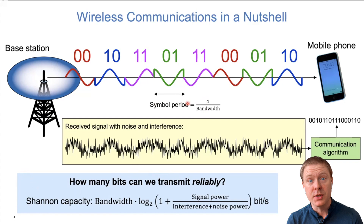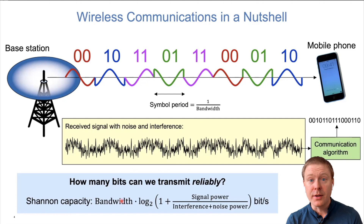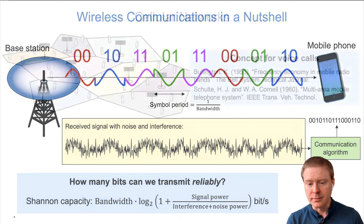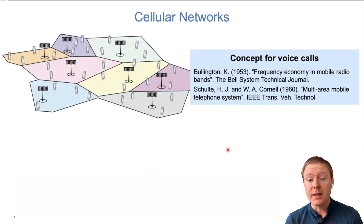There is something called channel capacity that tells us how many options we should choose per symbol period in order to transmit as much information as possible reliably. The formula is essentially: bandwidth multiplied by the logarithm base-two of one plus the signal power at the receiver divided by the interference plus noise power. This tells us how many bits per second we can transmit.